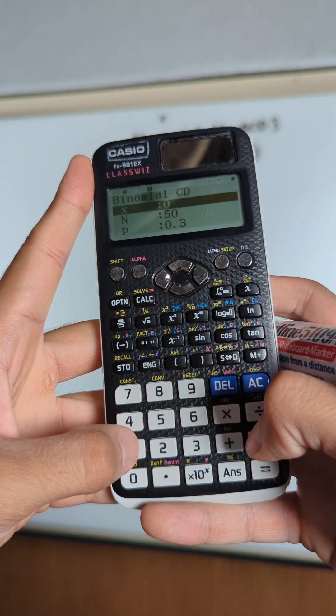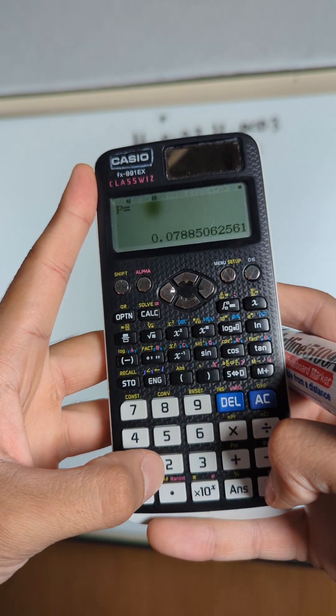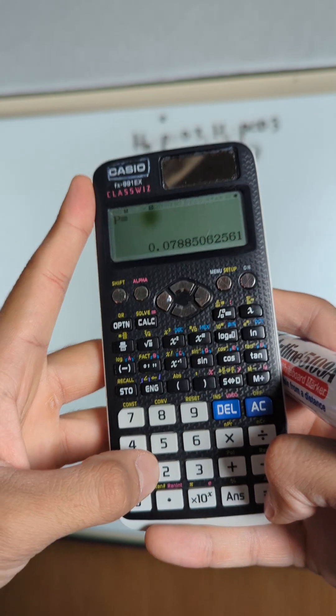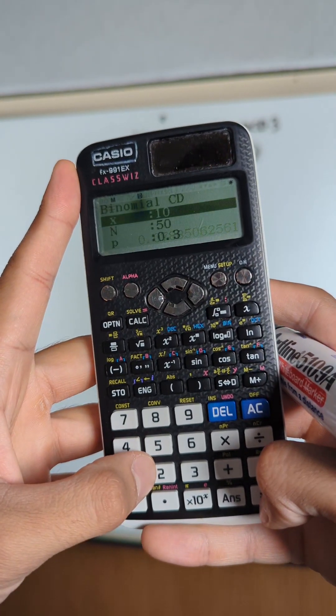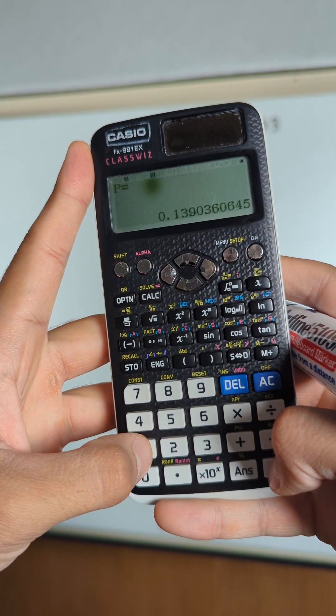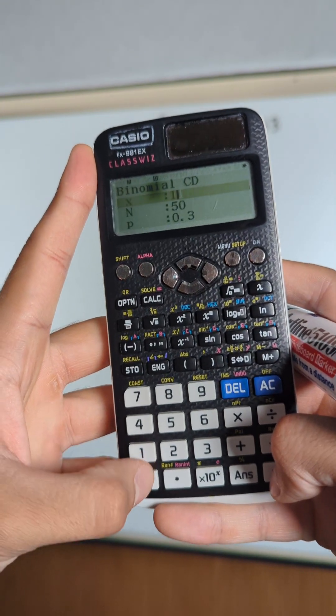You're just going to play around with values like 10 for example. That's 8% or 7.8%. Actually no, we wanted 10% or less, didn't we? So maybe 11. Okay, that's too big. So the answer is 10.